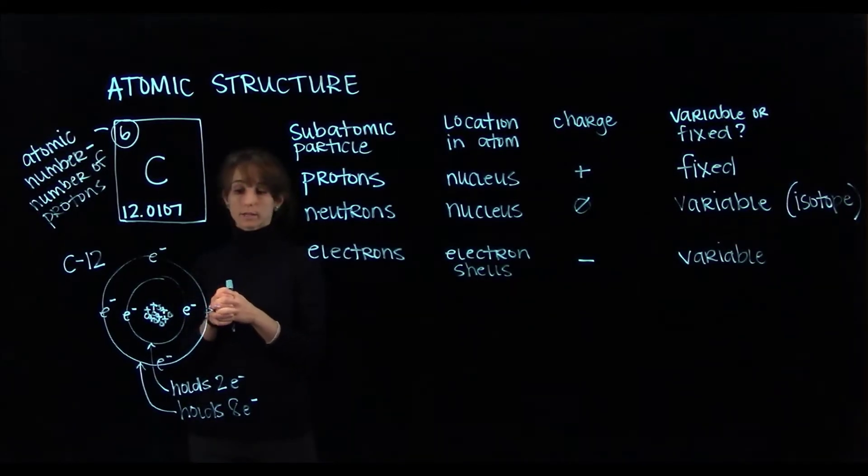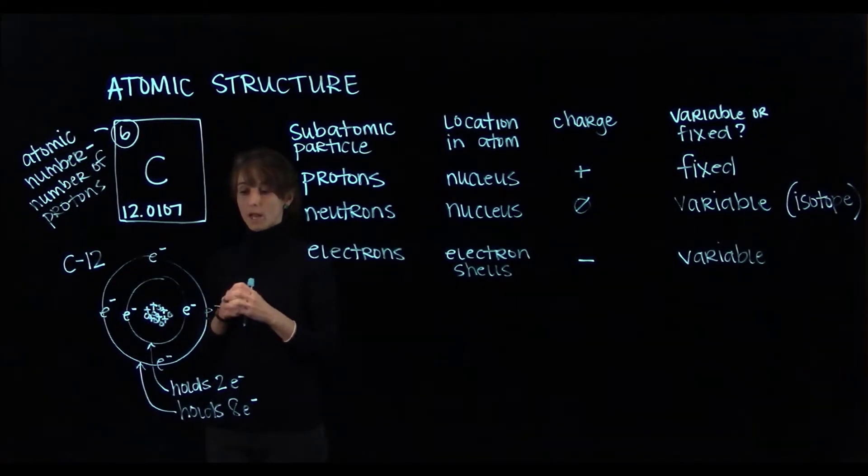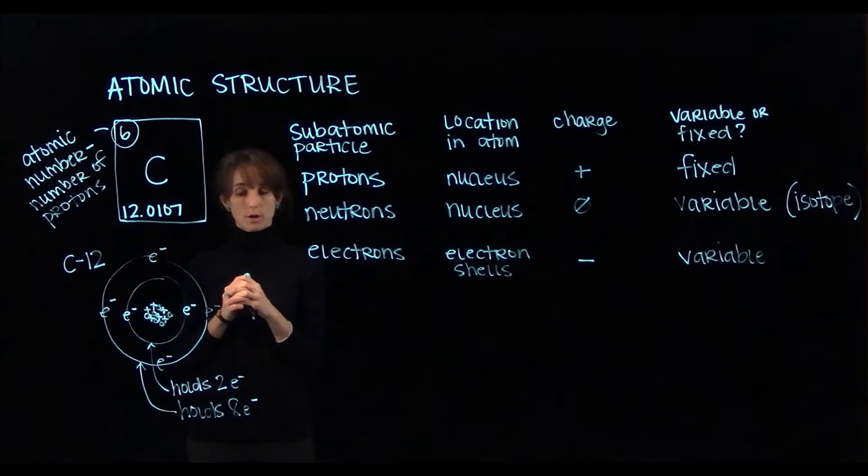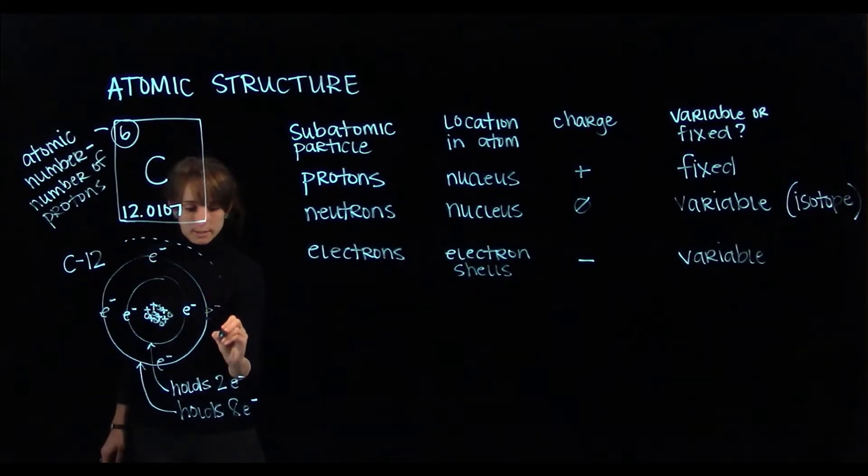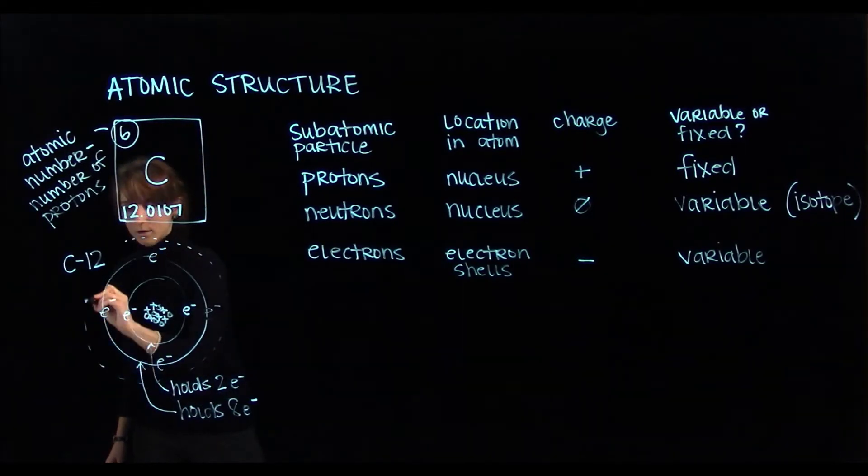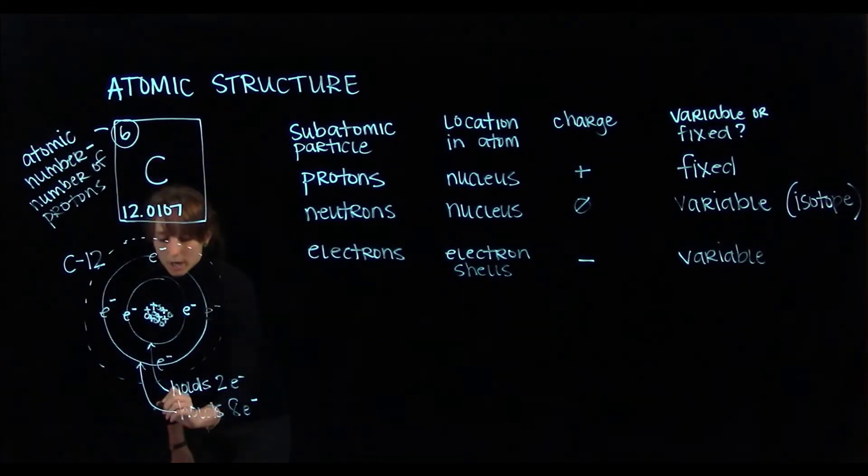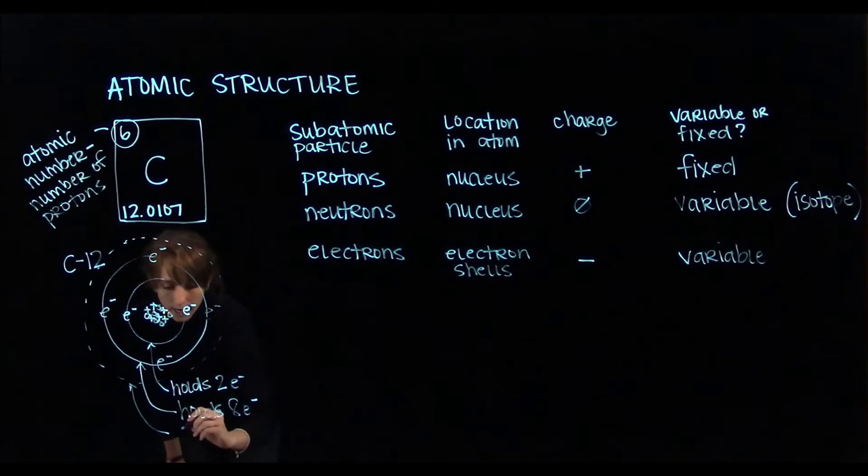Protons and neutrons in the nucleus, and electrons orbiting around the nucleus in electron shells. Now carbon only has two electron shells, but for larger atoms, you may need to add a third. I'll draw it as a dashed line here, and that third shell can also hold eight electrons.